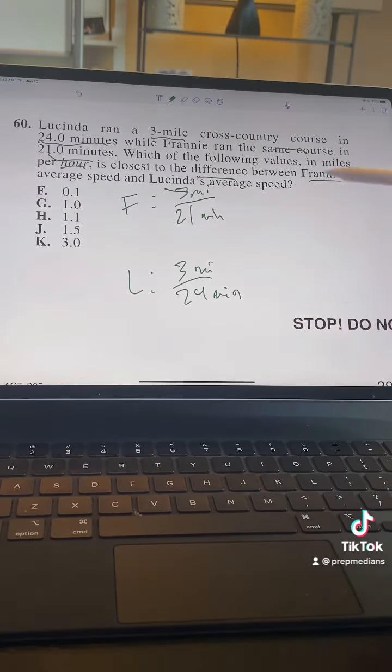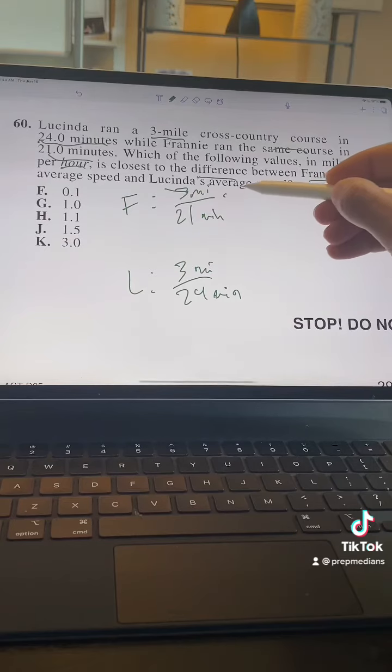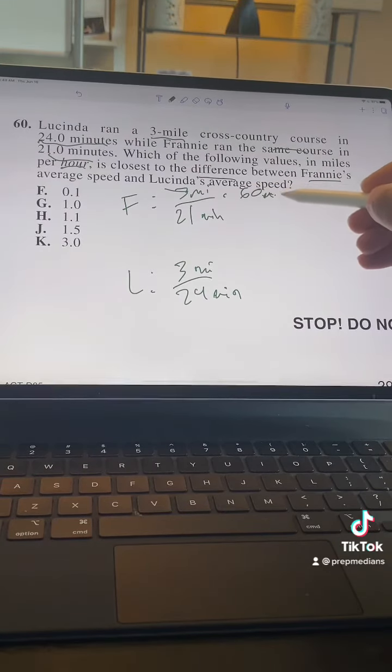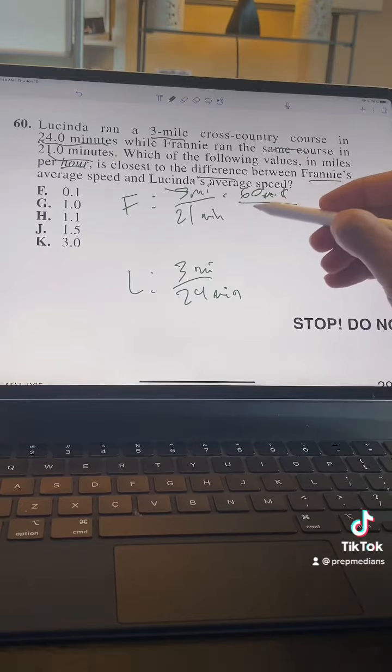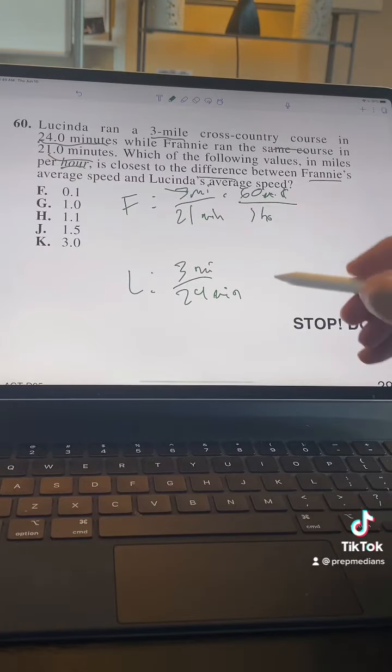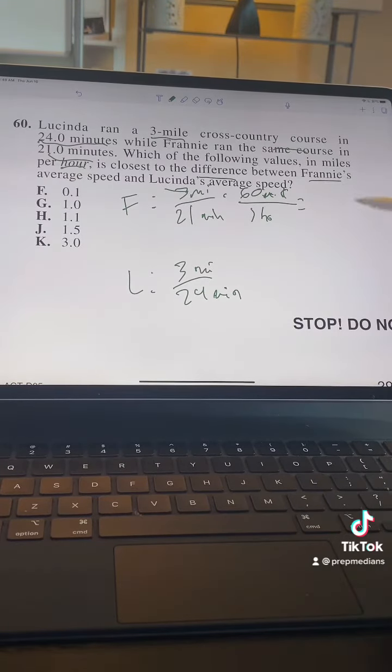You just need to convert these into miles per hour. We do that through dimensional analysis. We put 60 minutes on top because we're trying to get rid of the minutes on the bottom, and that's equivalent to one hour. That is going to give us, after we throw it into our handy-dandy calculator, 8.57 roughly.